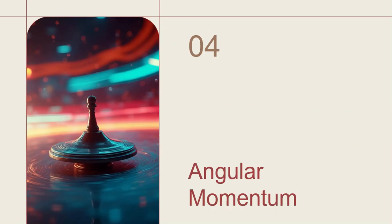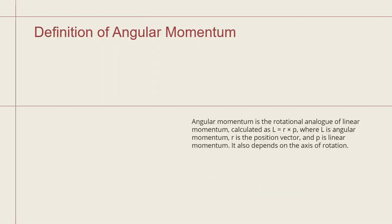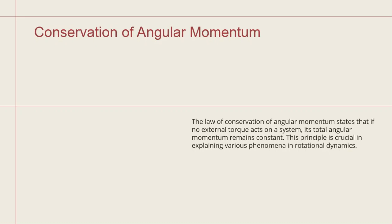Fourth, what is meant by angular momentum? Angular momentum can be defined as L equals R cross P, where L is the angular momentum, P is the linear momentum, and R is the position vector. Angular momentum depends on the axis of rotation.